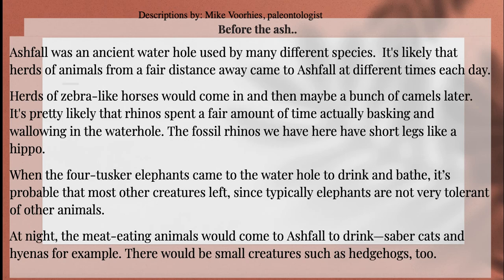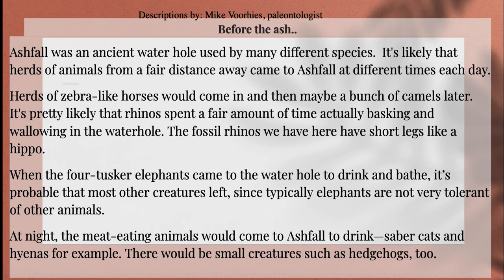At night, the meat-eating animals would come to Ashfall to drink — saber cats and hyenas, for example. There would be small creatures such as hedgehogs, too.